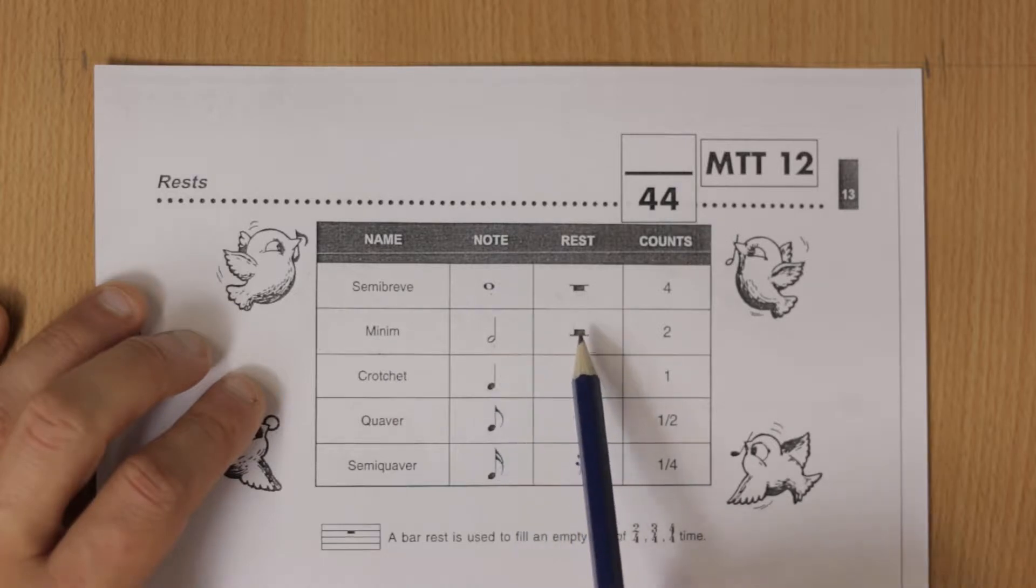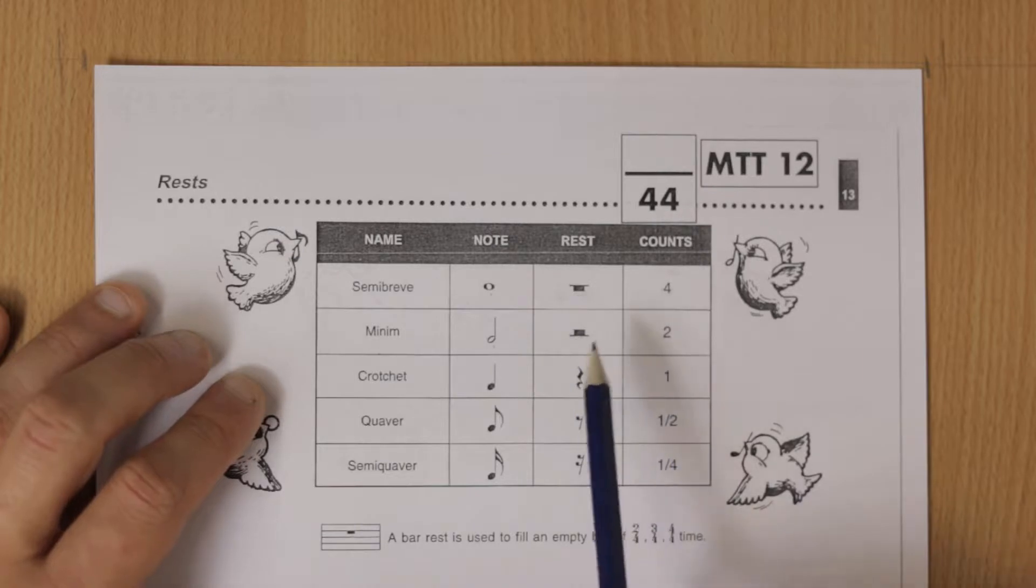A minim is like that and the rest is lighter than the semi-breve rest. It's a rectangle sitting on the middle line. That's two beats.